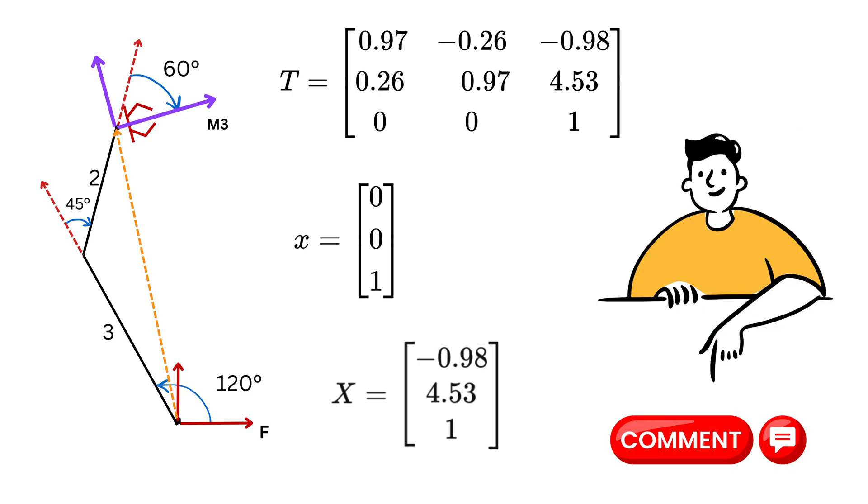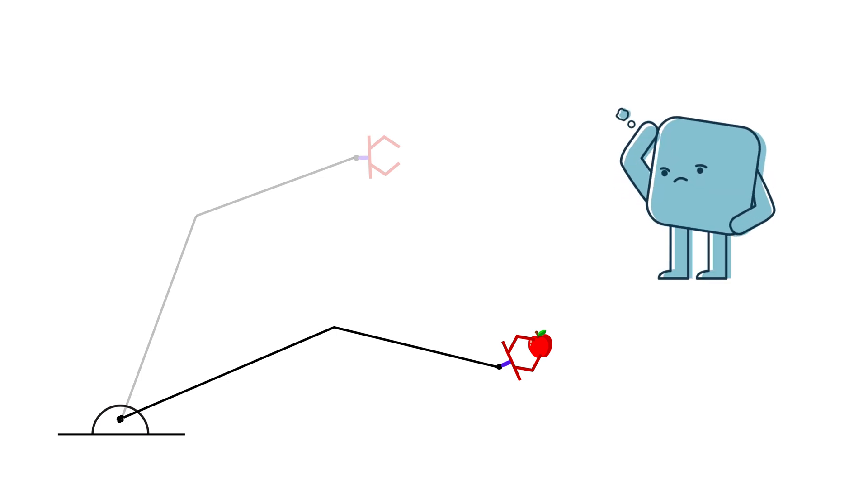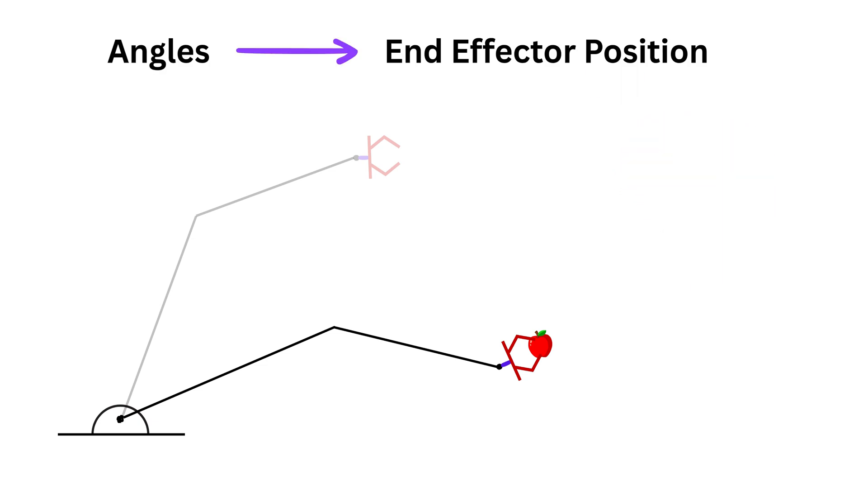Now imagine this, your robot is in this orientation, and what if we place an object somewhere on the table, say at this point right here, and we want the robot's end-effector to reach that exact spot? How do we figure out what the joint angles should be so the robot moves just right to reach there? We already know how to find the position if we know the angles using forward kinematics.